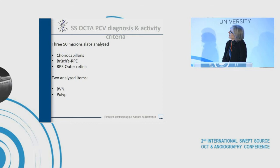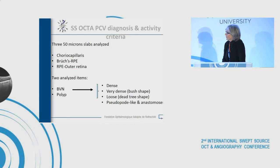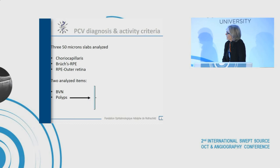We used a 50-micron slab to analyze the choriocapillaris, the Bruch's RPE layers, and the RPE outer retina layers, to analyze two principal items: the branching vascular network, which could be dense, very dense with a bush-shape aspect, loose, or detritus-shaped, and whether pseudopod-like anastomosis were present. Polyps were described as black holes with hypo- or hypersignal, surrounded or not by halos.